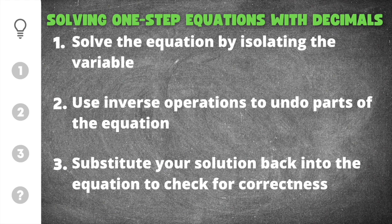The first thing you need to know when solving one-step equations with decimals is that you need to solve the equation by isolating the variable. That means what you're doing is you're trying to get x or the variable equal to a number.